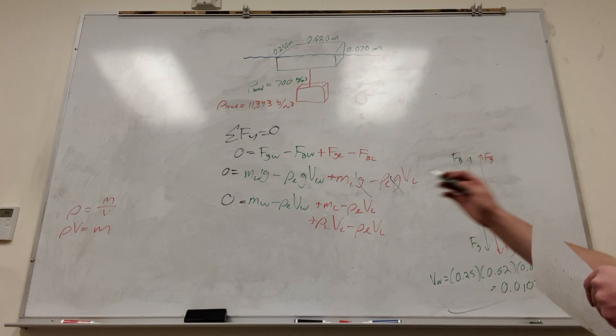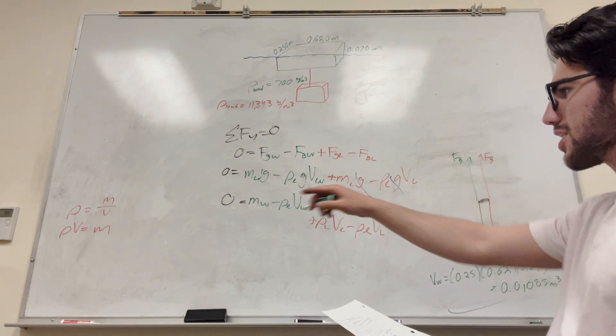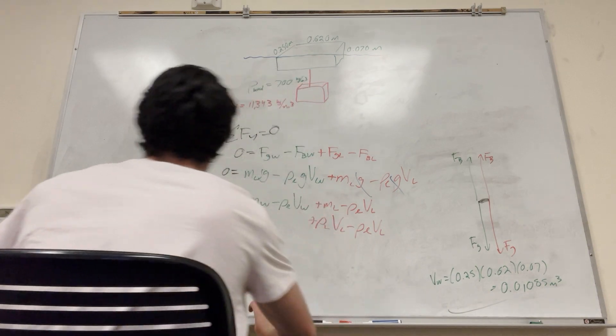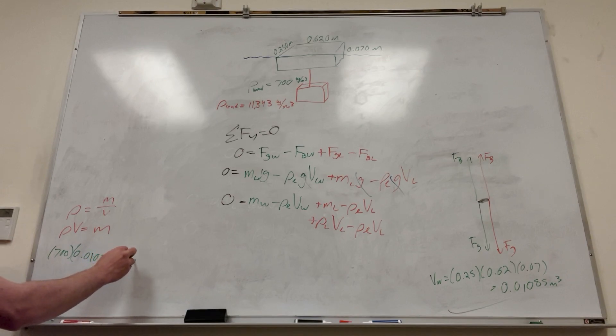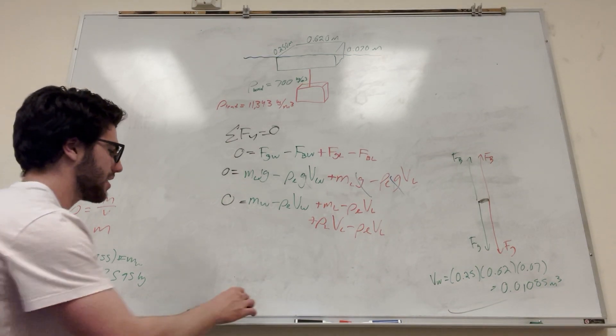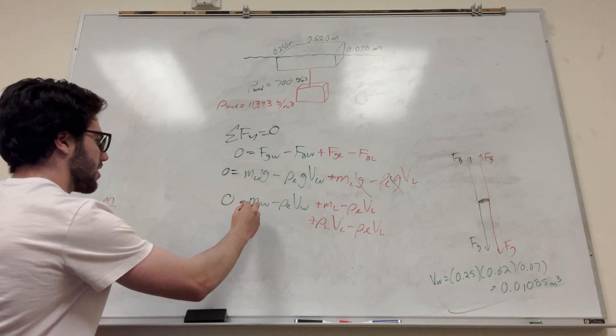So then we have the volume of the wood, and we have the density of the wood. We're trying to find the mass of the wood. Let's go back to our thing over here. We have that mass is equal to density times volume. What are we trying to find? The mass, of course. So our density of wood is 700. Our volume of wood is that number. 0.01085 is equal to the mass of the wood. You do this, and you get about 7.595 kilograms. So now we literally have everything we need to solve our equation.